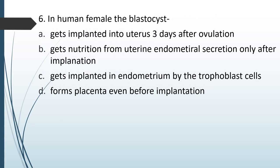In human females, the blastocyst: (A) gets implanted into uterus 3 days after ovulation; (B) gets nutrition from uterine endometrial secretion only after implantation; (C) gets implanted in endometrium by trophoblastic cells; (D) forms placenta even before implantation. The correct answer is option C — the blastocyst gets implanted in endometrium by the trophoblast cells.